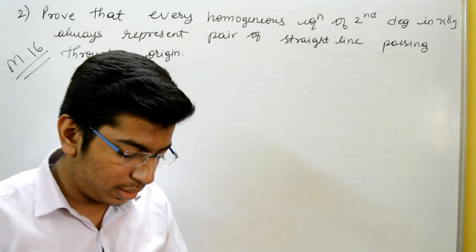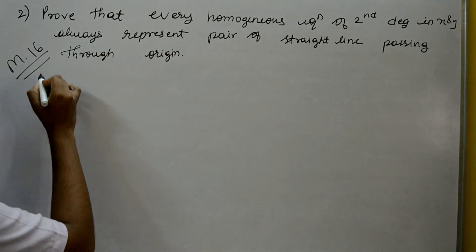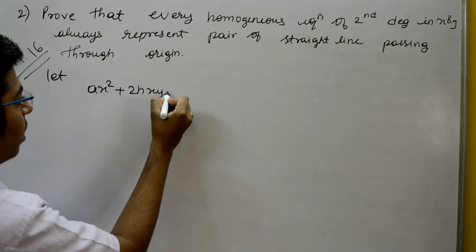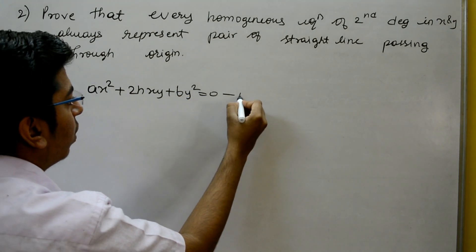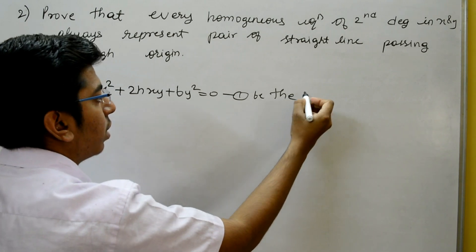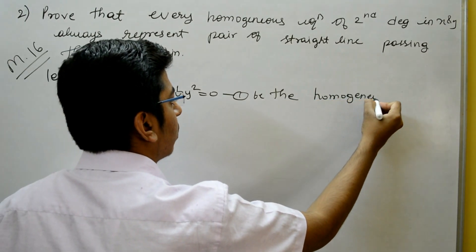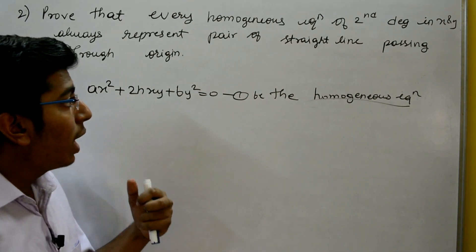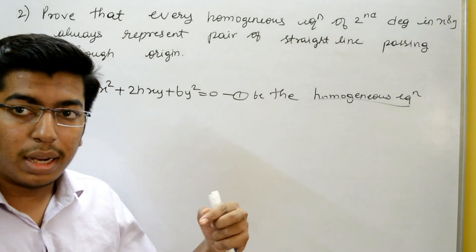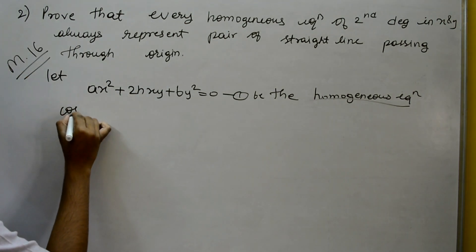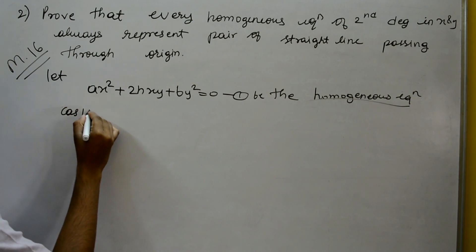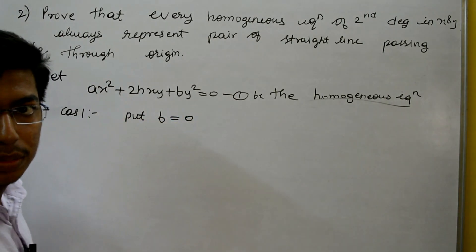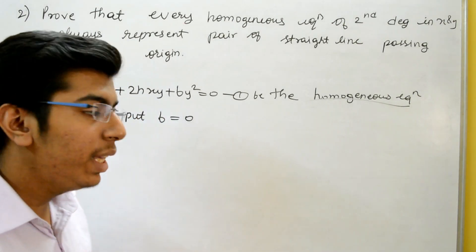The solution for Theorem 2 begins. Let AX² + 2HXY + BY² = 0 be the homogeneous equation. We take different cases. There are three cases. Case 1: put B = 0 in this equation.